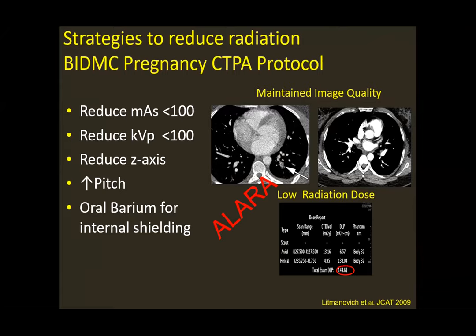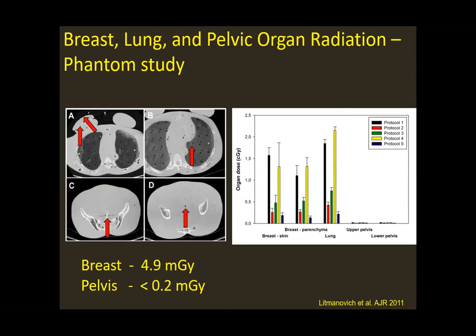Be very mindful of imaging the appropriate Z-axis — we are not including the lung apices, and we image only until the diaphragm. For pregnant patients, we also administer oral barium for internal shielding. Accumulated in the stomach, this barium prevents scattered radiation from traveling from the chest into the abdomen to reach the fetus. Measurements obtained using a phantom showed that radiation to the pelvis was less than 0.2 milligray regardless of the protocol — more than 100 times less than the 50 milligray stochastic threshold.